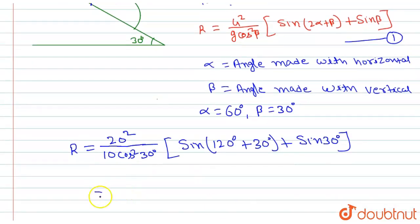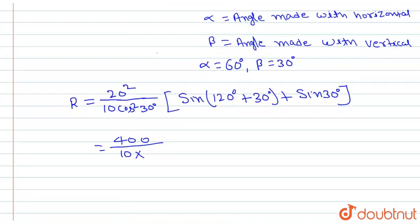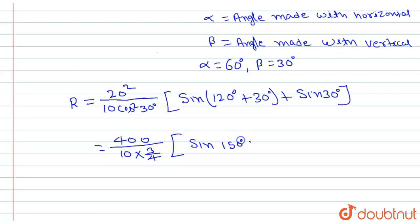This gives us 400 divided by 10, multiplied by cos 30 degrees squared. Cos 30 degrees is root 3 over 2, so cos squared 30 degrees equals 3 over 4. And this is multiplied by sin 150 degrees, plus sin 30 degrees.